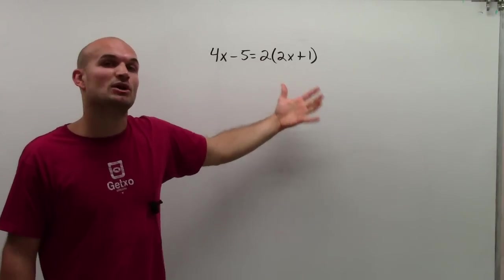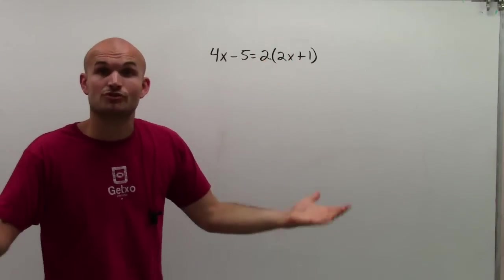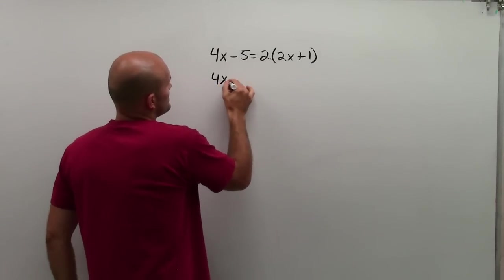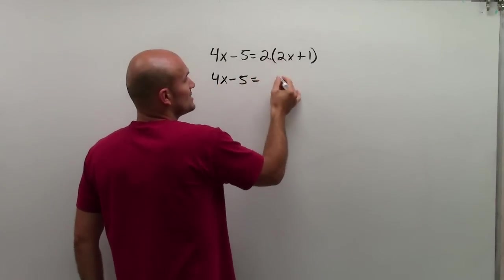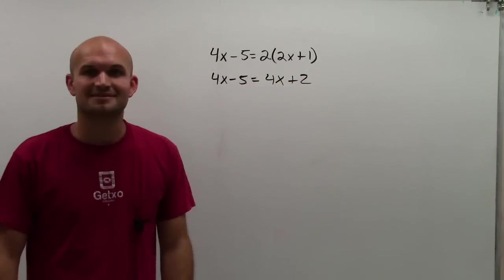There's no exponents. Then I look, is there any multiplication and division I could do? Well, yes. This 2 times parentheses means distributive property, meaning I can multiply. So I have 4x minus 5 equals 2 times 2x, which is 4x, plus 2.